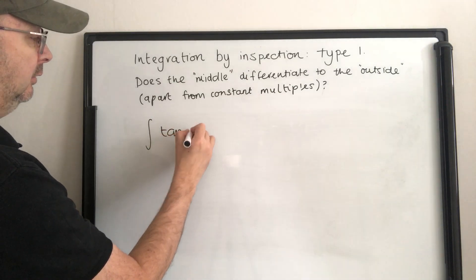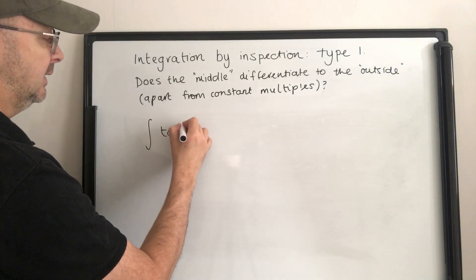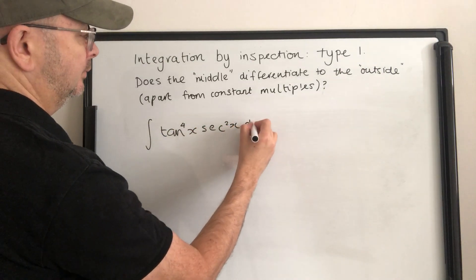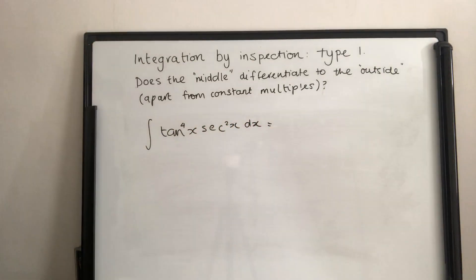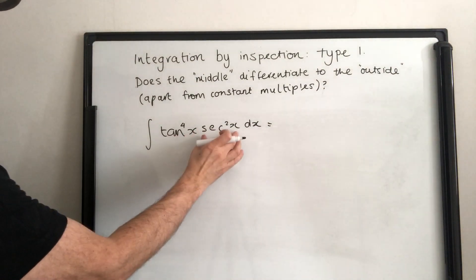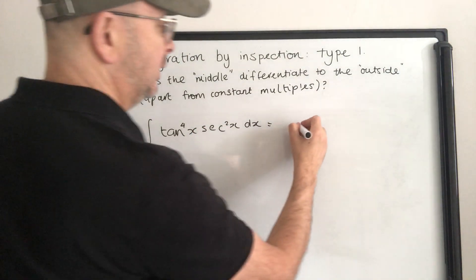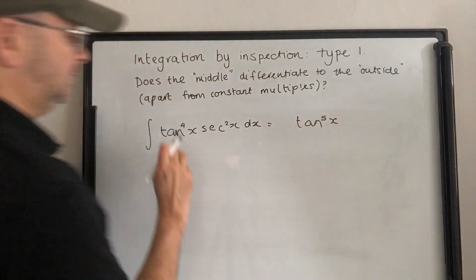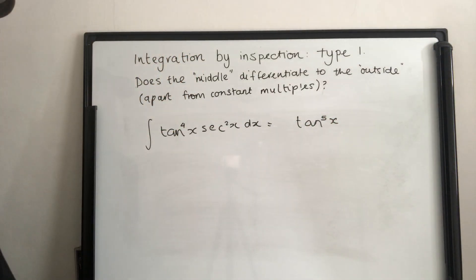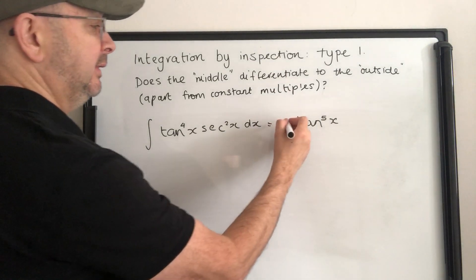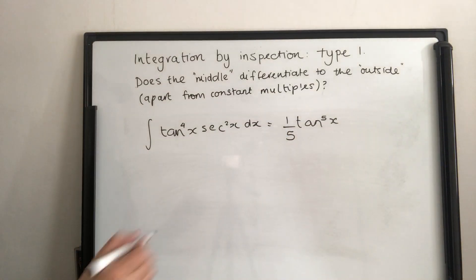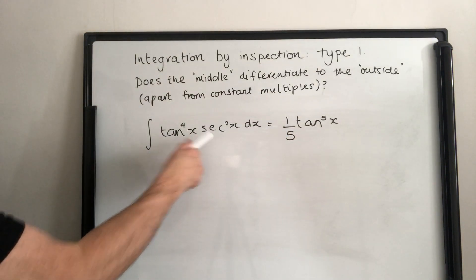The derivative of tan x is sec squared x. So for tan to the power of 4 of x times sec squared x, the middle differentiates to the outside. We start by writing tan to the power of 5 of x. Differentiate: 5 comes down the front; we don't want it. Then multiply by tan x differentiated, which is sec squared x. Answer: one fifth tan to the power of 5 of x, plus c.